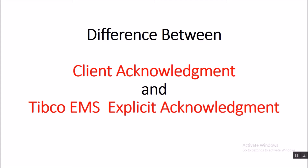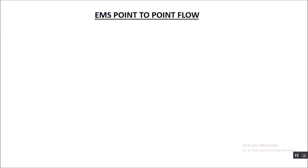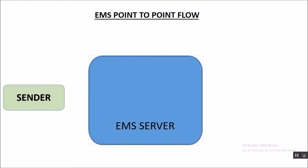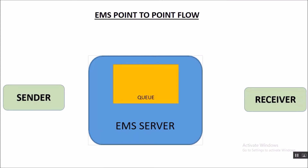Let's understand the EMS Point-to-Point flow for a queue. We have our sender who sends the message — or we can say it is the producer. We have an EMS Server and we have a receiver, also known as a consumer. Inside our EMS Server, we have a queue, which is a container that holds the message.